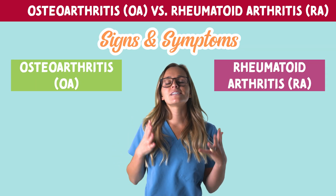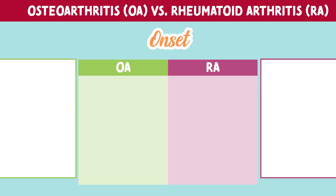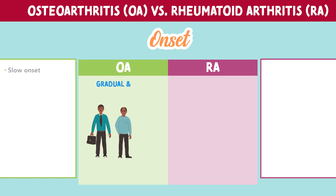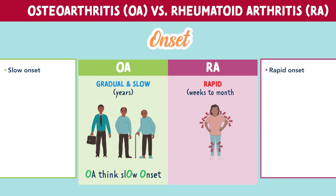Now let's dive into the signs and symptoms of each condition. First, let's look at the onset. Osteoarthritis' onset is gradual and slow, often taking years to develop. You can remember this by the memory trick: OA thinks slow onset. But for rheumatoid arthritis, the onset is more rapid, usually occurring over weeks to even months. You can remember this by the memory trick: RA thinks rapid onset.